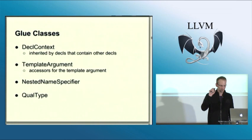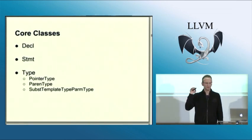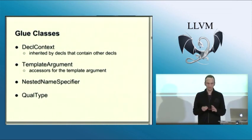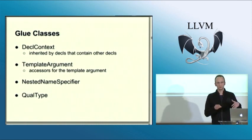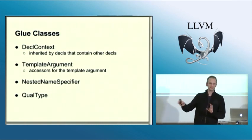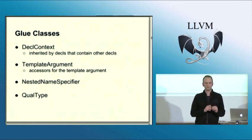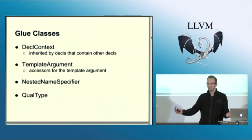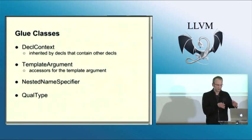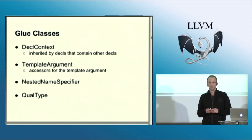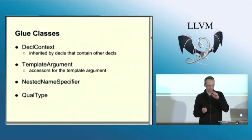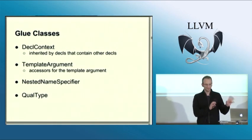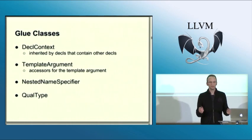When you work with the Clang AST, you'll find a lot of different other classes beyond the basic three. Those classes are what I call glue classes — they're basically there to get you from one place in the AST to another. For example, DeclContext is something that some declarations inherit from if they can contain other declarations. Template arguments can be different types of nodes, and nested name specifiers model certain kinds of qualifications on a declaration.